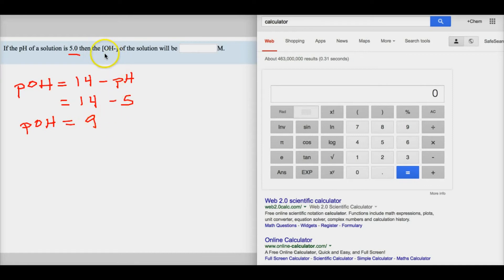In this problem though, you are asked to figure out the OH- concentration now. So to get the OH- concentration, we have to take 10 raised to the power of the negative pOH. So we'll take 10 to the negative 9.